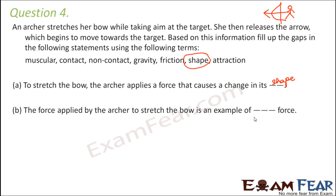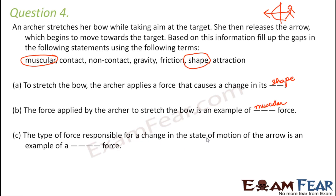'The force applied by the archer to stretch the bow is an example of a dash force.' The force is applied with hands, and the movements of hands are due to the muscles inside our body, so this is an example of muscular force. 'The type of force responsible for a change in the state of motion of the arrow is an example of a dash force' — again muscular force, which is a contact force because it acts only when the two objects are in contact, such as the archer's hand and the bow.